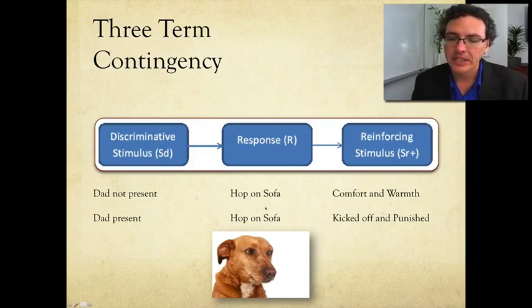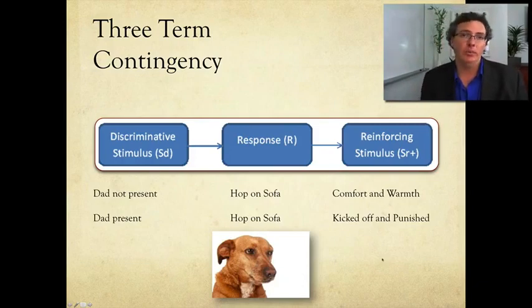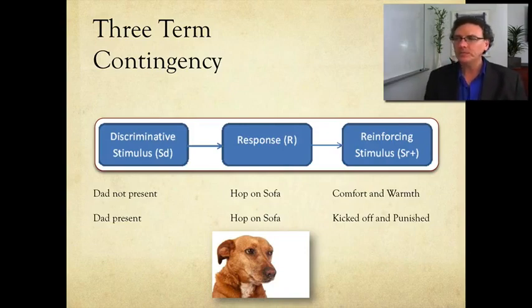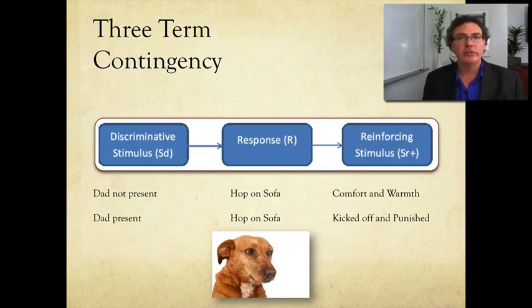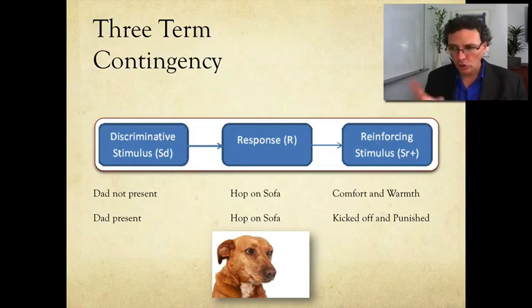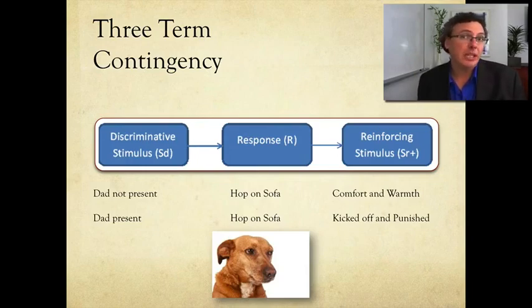Let me jump right to a concrete example related to the first dog I had, Max — actually Maxine. We brought Max into our home and she knew nothing about us or our home. As she became more comfortable, she would experiment and try things. So let's say we brought her into our living room and she would jump up on the sofa. Sometimes when she jumped up on the sofa, she got kicked off and yelled at. Other times she'd jump up and get to just lay there and be comfortable.